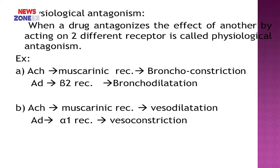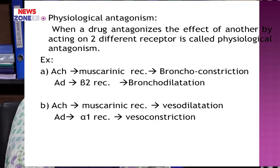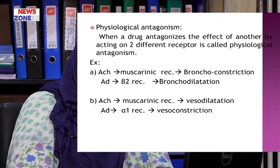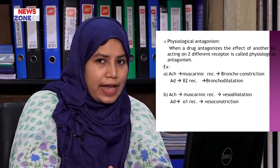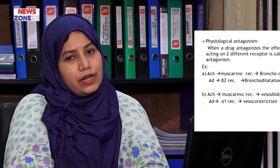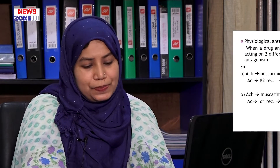Another example of physiological antagonism is acetylcholine and adrenaline acting on blood vessels. Acetylcholine causes vasodilation in peripheral blood vessels. On the other hand, adrenaline acts on alpha-1 receptors and causes vasoconstriction. So they antagonize the action of one another by acting on two different receptors — acetylcholine acts on muscarinic receptors and adrenaline acts on alpha-1 receptors.